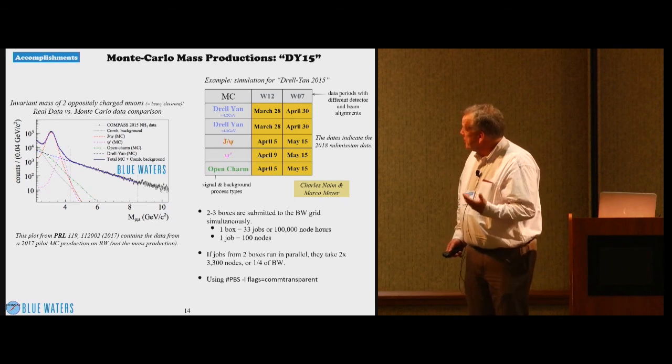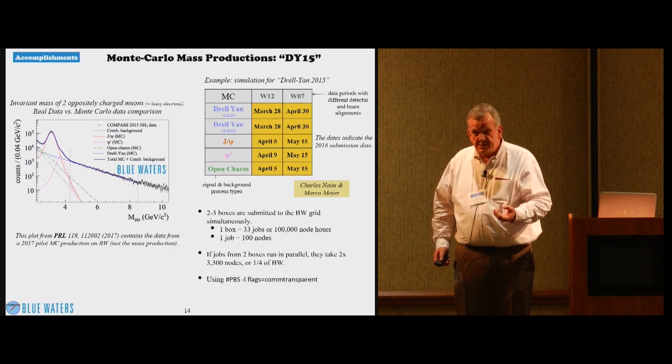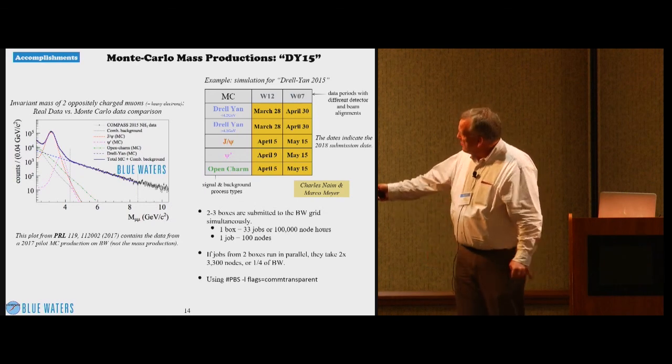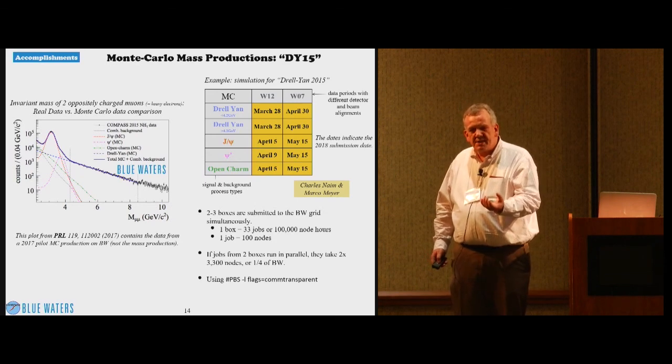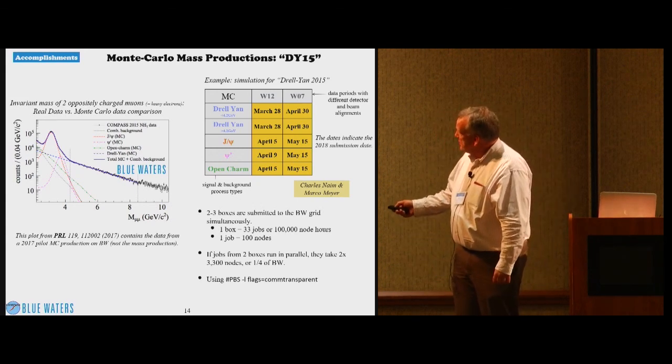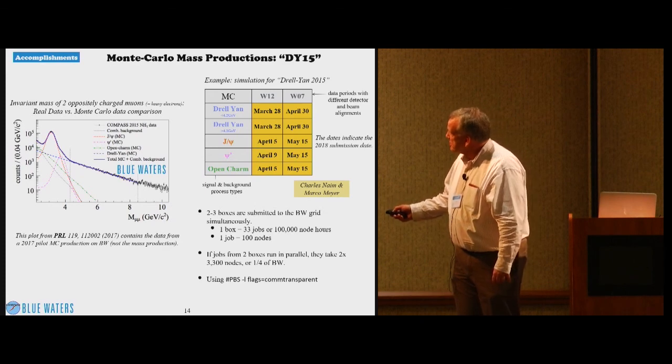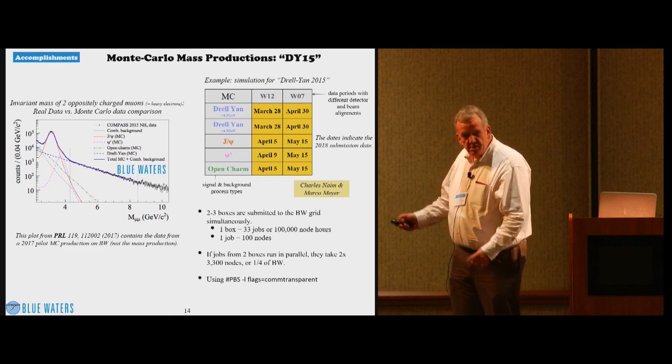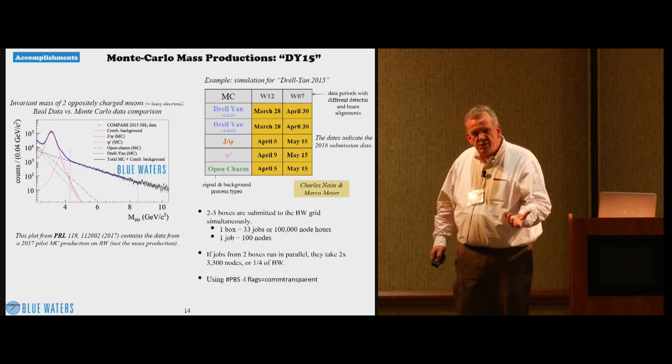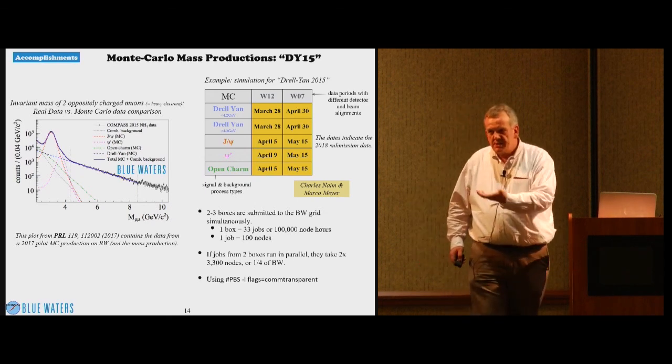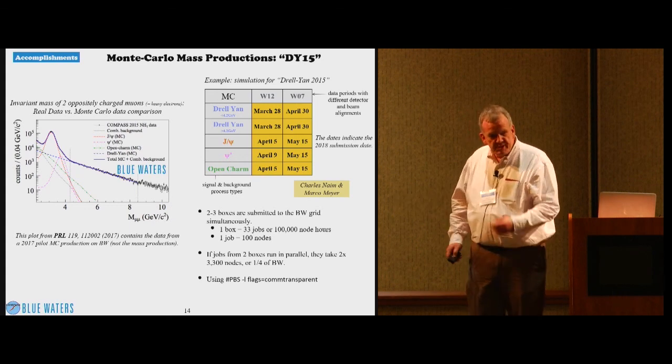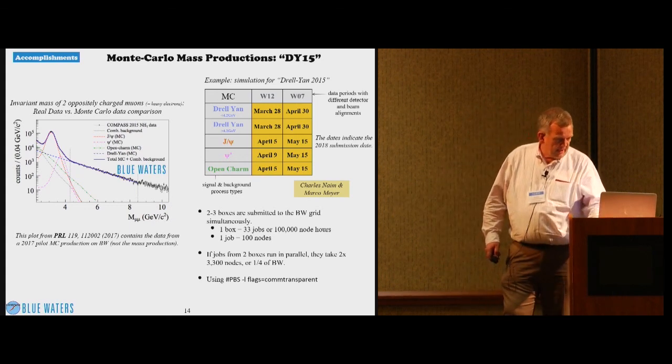So here's the first example where this was already used, even though this is a new allocation, in a publication. We have a first result on the Sivers function from our 2015 data. Our signal are pairs of muons that come from what we call the Drell-Yan process. But there are many other processes that produce these muons as well. For example, the production of J-psi that's indicated here, the production of the psi prime here, then combinatorial background combined with an open charm event. We show this here only in one dimension in invariant mass, but it's important to know this background in other parameters as well that enter the analysis.